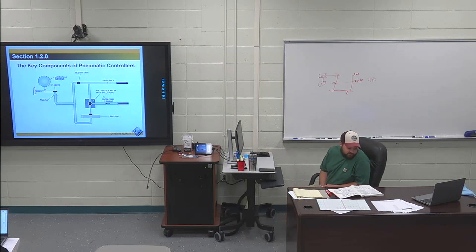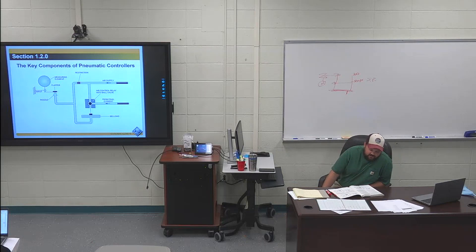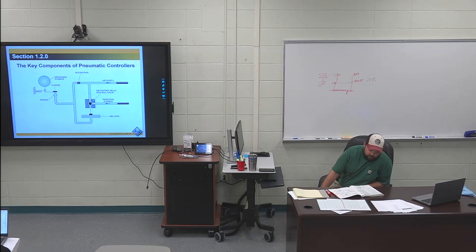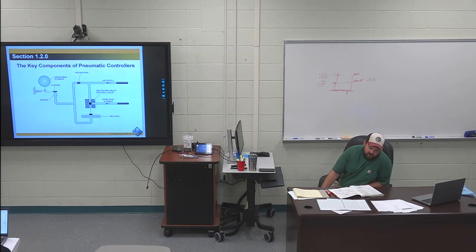My first highlight in section 120 is the second sentence: 'The signal can come from a measuring element, an I-to-P transducer — which converts an electrical current signal into the equivalent pressure signal — or a pneumatic transmitter.'